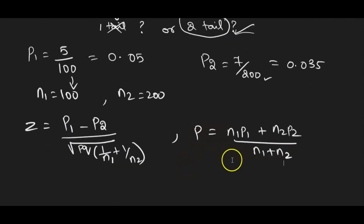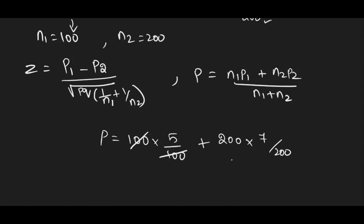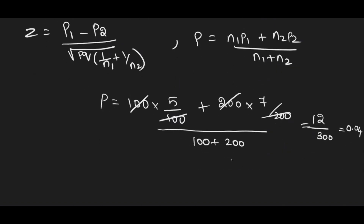The combined proportion p = (n1·p1 + n2·p2) / (n1 + n2). Substituting: n1 = 100, p1 = 5/100 — the 100s cancel — plus n2 = 200, p2 = 7/200 — the 200s cancel — giving (5 + 7) / 300 = 12/300 = 0.04.